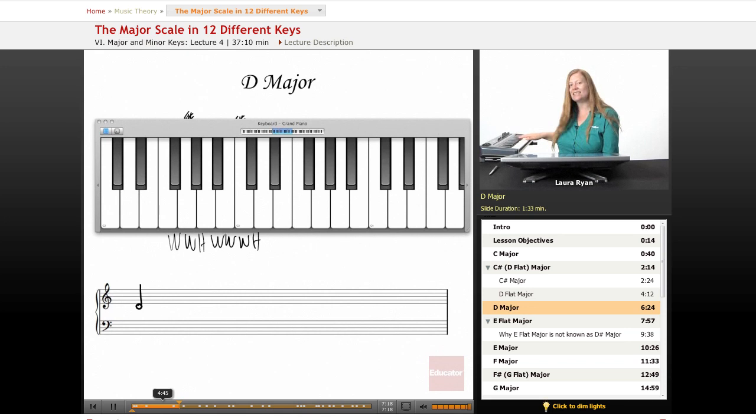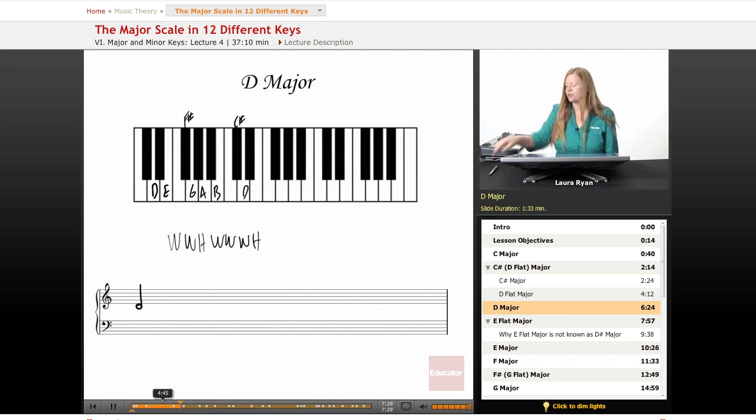Only two black keys, a little easier. Whole, whole, half, whole, whole, whole, half. There it is, that's what it sounds like. Let's continue writing it out: D, E, F sharp, G, A, B, C sharp, and D. And you can write it going up and down, but for time's sake we'll just write the ascending scale going up.